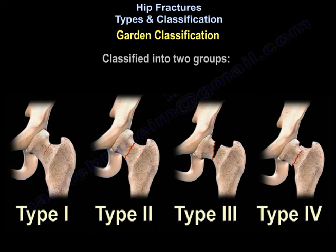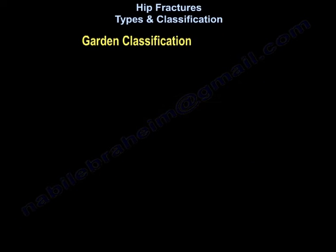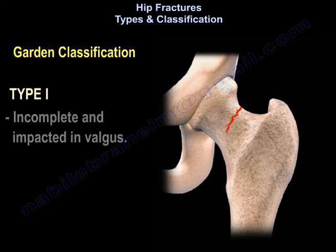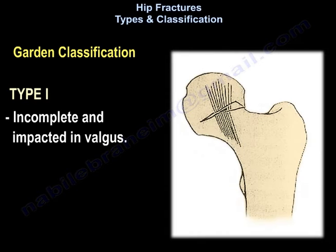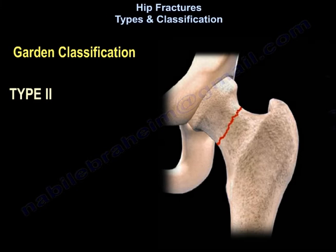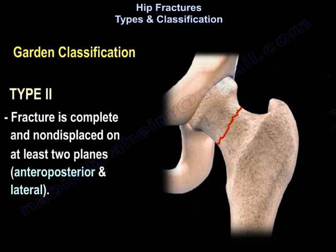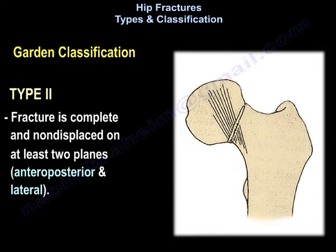It classifies the fracture into two groups: non-displaced — type 1 and type 2 — and displaced — type 3 and type 4. Type 1 is an incomplete fracture, impacted in valgus. Type 2 is a complete fracture that is non-displaced on at least two planes, the AP and the lateral.